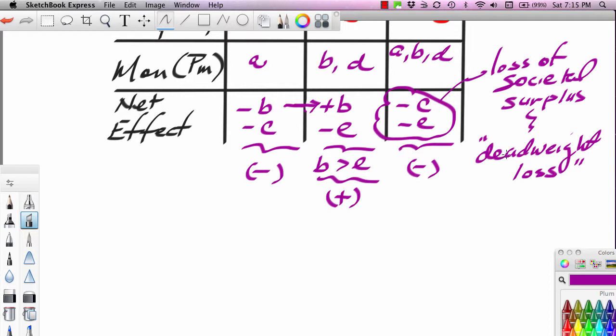So monopoly is a market failure. It's not a matter of assuming the firm is greedier than competitive firms. In economics, we assume that single producers, say utility companies, single producers of electricity, we don't assume that they're greedier than a farmer who competes with a million other farmers. Let's say a corn farmer. We assume all business people are equally motivated by profit.